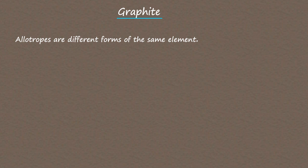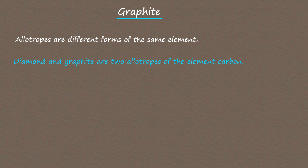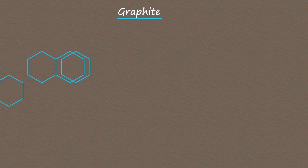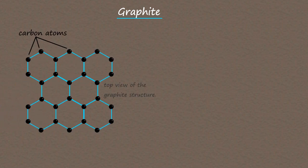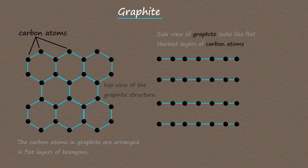Diamond and graphite are two allotropes of the element carbon — that is, different forms of the element carbon. Like diamond, graphite has a giant covalent structure, but the carbon atoms are arranged very differently in graphite, and this leads to some very different properties. The graphite structure looks like a flat layer of hexagons with carbon atoms placed at all the corners. The layers of hexagons are flat, and a side view of the graphite structure would simply look like flat layers of carbon atoms stacked one on top of the other.